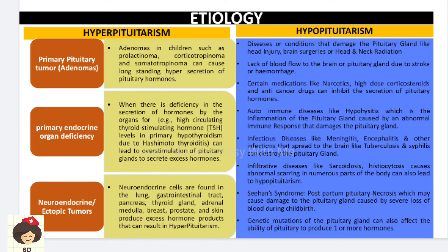Primary endocrine organ deficiency can also cause hyperpituitarism. For example, in a thyroid disorder such as thyroiditis or hypothyroidism, the thyroid gland is unable to release hormones. When thyroid hormone levels are low in the blood, the pituitary keeps stimulating more hormone to induce secretion by the target gland. If the thyroid cannot secrete hormones due to disease, the pituitary stimulates more and more, resulting in increased pituitary hormone secretion — called hyperpituitarism.